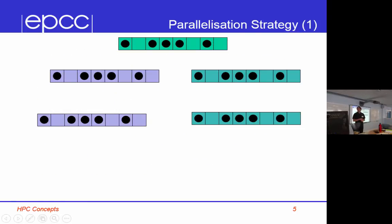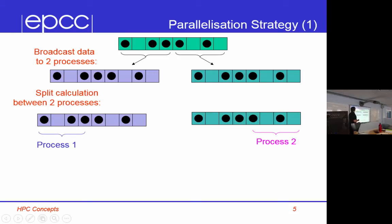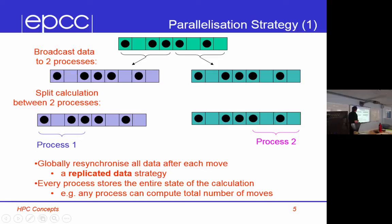In parallel, what I could do is broadcast the data to all processes — everyone could have all the data, update their local piece of the array, and then globally re-synchronize. This is called a replicated data strategy, where everybody has all the data, everybody updates part of it, and then you re-synchronize back together. Every process stores the entire state of the calculation.